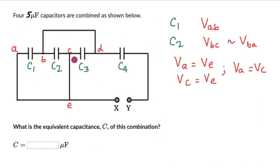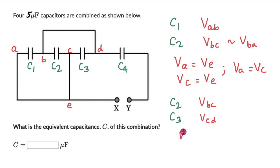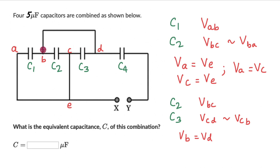Now let's look at the potential difference across C2 and C3. Across C2 we already know it is VBC, and across C3 it's VCD. When we look at the diagram, point B is connected to point D with a wire. Between points B and D there is no potential drop, so VB equals VD. Therefore VCD equals VCB, meaning the potential difference across C2 and C3 is also the same.